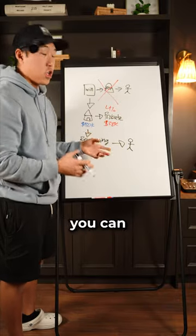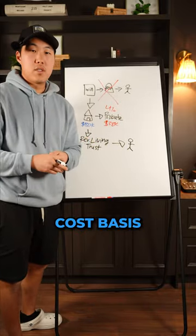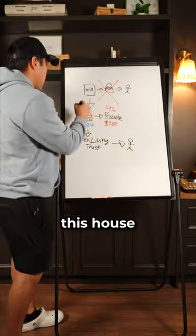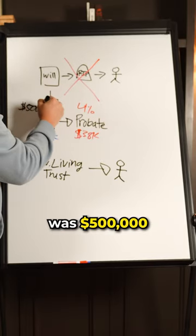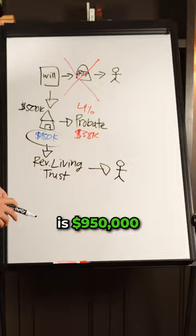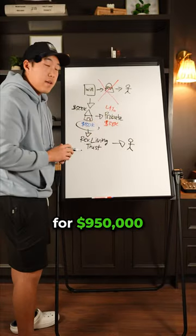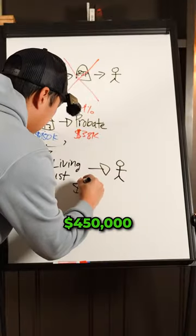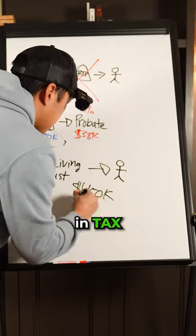And the best part is by using this method, you can also use what's called a step up in cost basis. So let's say the original purchase price for this house was $500,000, and the new value of the house when you pass is $950,000. So the kids decided to sell the house for $950,000 and they're left with $450,000 in tax-free money.